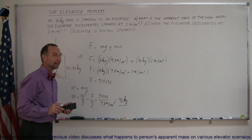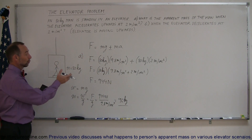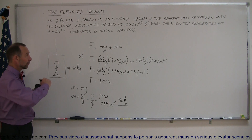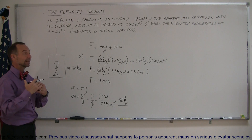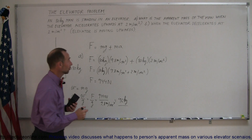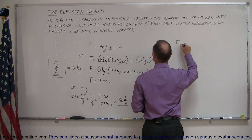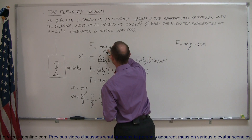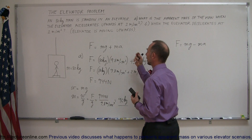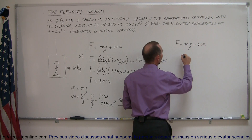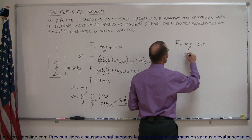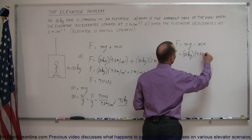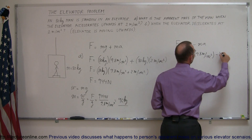So the scale shows 96 kilograms while the elevator is moving upward, instead of the actual 80 kilograms. Now, when the elevator reaches the desired floor and begins to slow down, there is a negative acceleration. At that point, the force equals mg minus ma. Here we use minus because we're decelerating — that is, accelerating downward. So this equals 80 kilograms times 9.8 meters per second squared minus 80 kilograms times 2 meters per second squared.